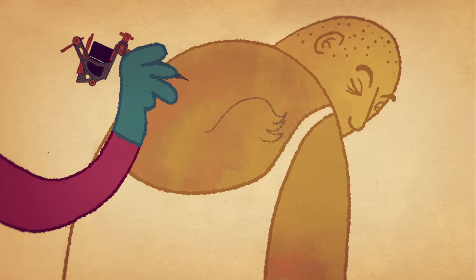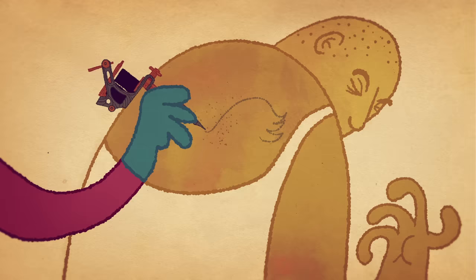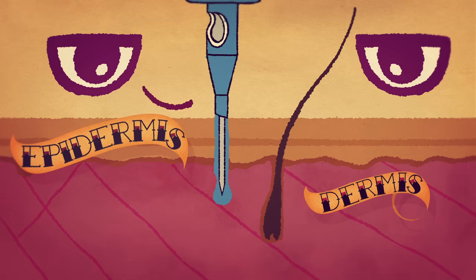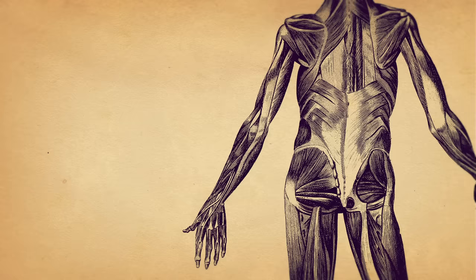Tattooing machines used today insert tiny needles loaded with dye into the skin at a frequency of 50 to 3,000 times per minute. The needles punch through the epidermis, allowing ink to seep deep into the dermis, which is composed of collagen fibers, nerves, glands, blood vessels, and more.